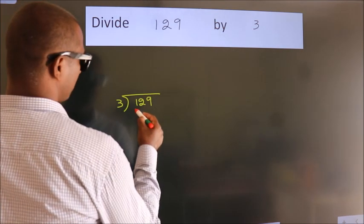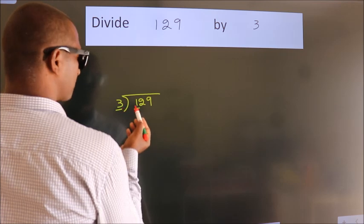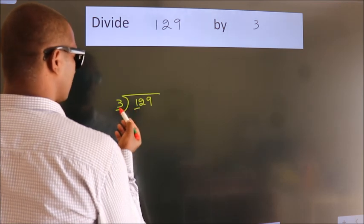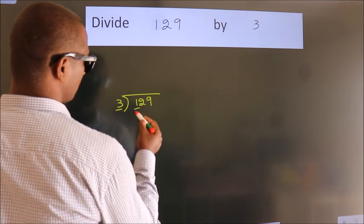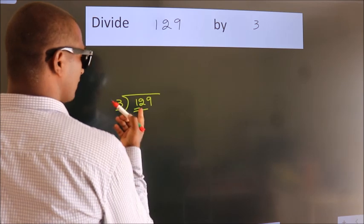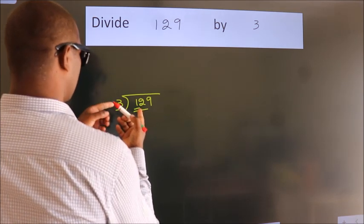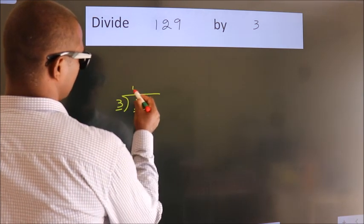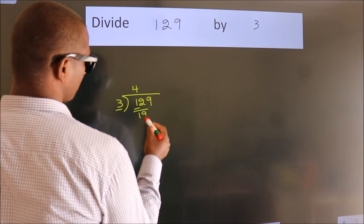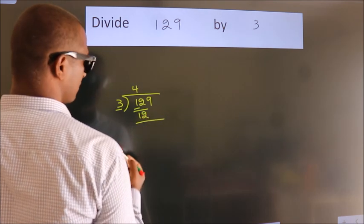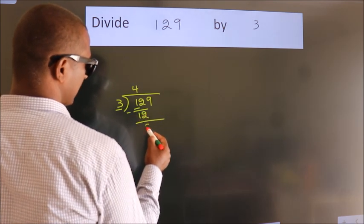Here we have 1, here 3. Since 1 is smaller than 3, we should take 2 numbers: 12. When do we get 12? In the 3 times table, 3 fours are 12. Now we subtract and we get 0.